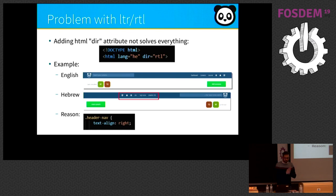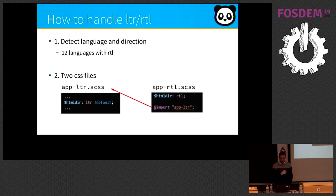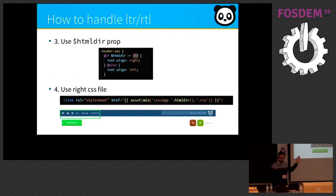Supporting RTL and LTR is not as simple as just adding the dir attribute on the HTML tag. For example, in English the buttons on the top right are right-aligned, but if you just do that in Hebrew the buttons are not aligned correctly — the reason being the CSS class 'header nav' is not right-aligned. So you first have to detect the language and direction. We have two CSS files: a main file with an HTML dir property, and a second file that redefines those HTML dir properties. Then we use this to apply the correct CSS file and fix the alignment.